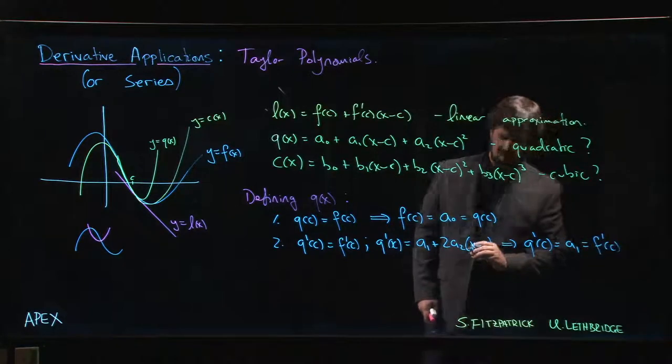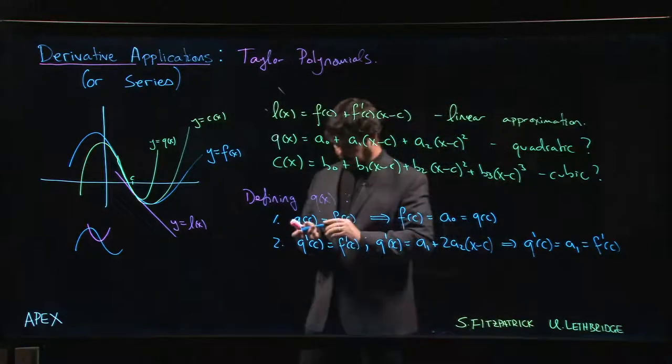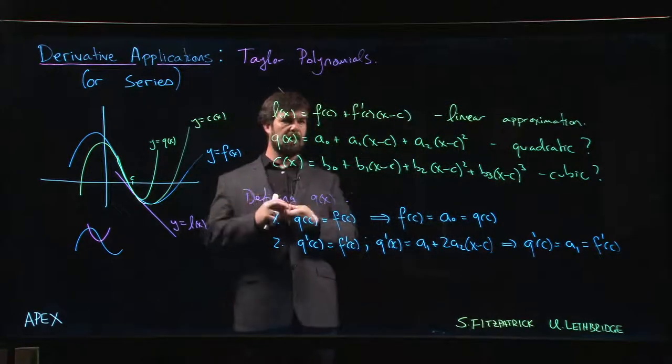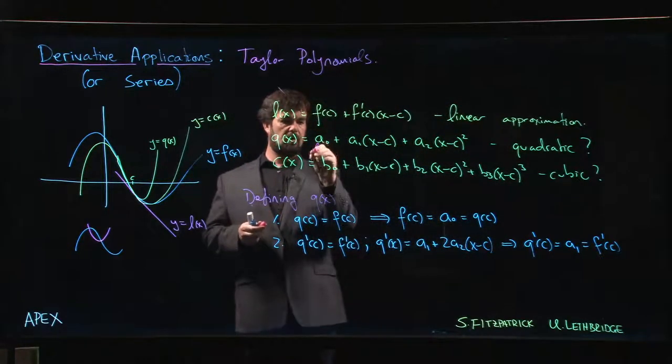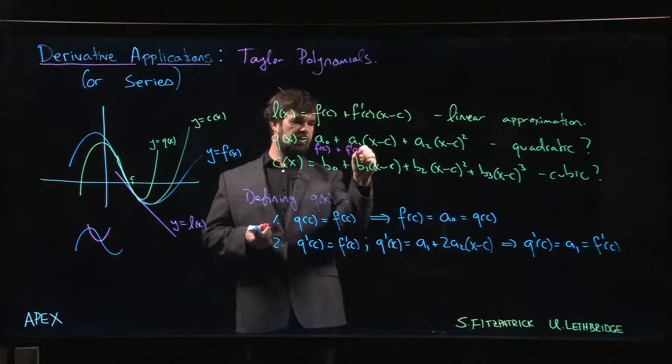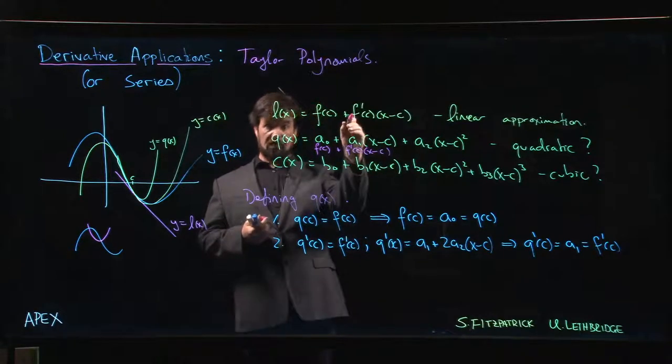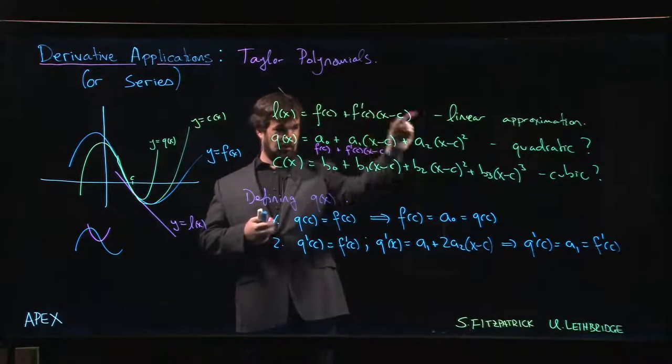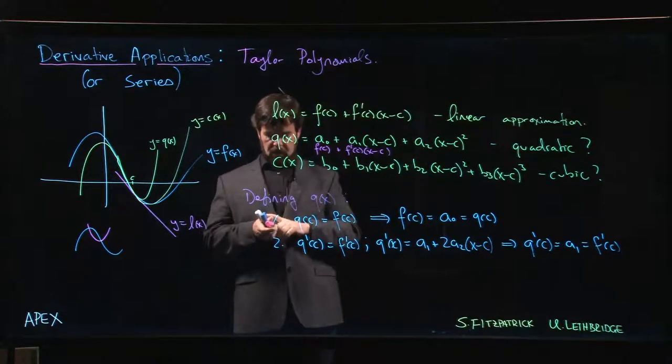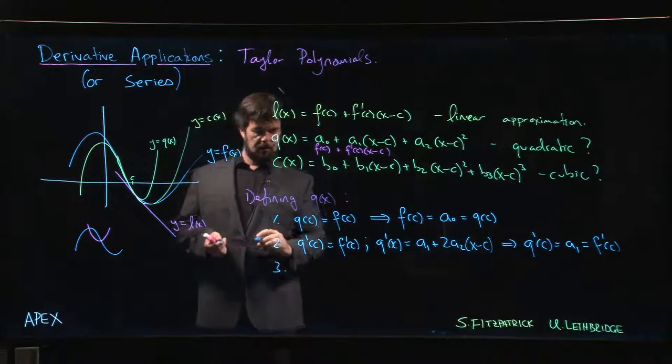Okay, so notice what we have so far. This is going to be F of c plus F prime of c times x minus c. So far it looks exactly like the linear approximation, but we have this one more term.